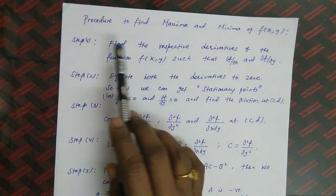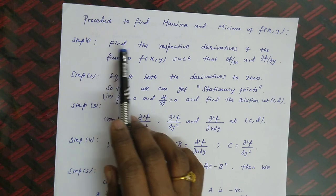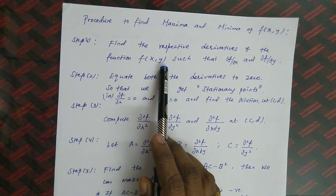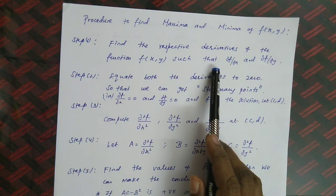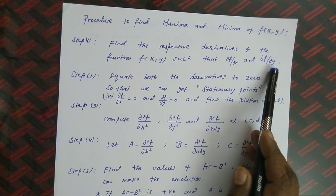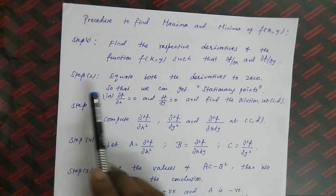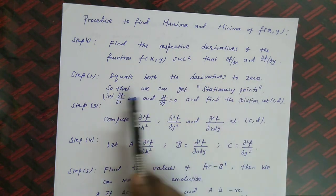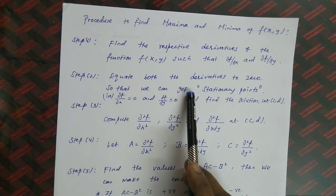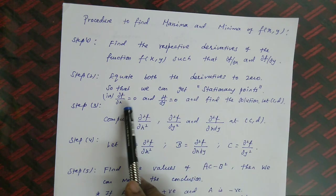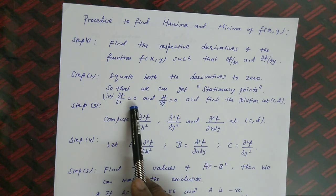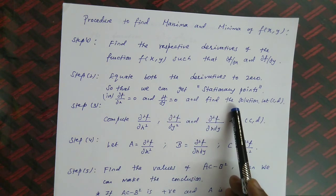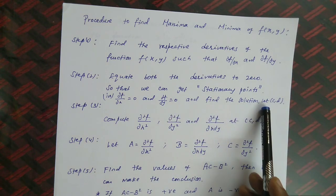Step 1: Find the respective partial derivatives of the function f(x, y), that is ∂f/∂x and ∂f/∂y. Step 2: Equate both the derivatives to 0 so that we can get stationary points — that is ∂f/∂x = 0 and ∂f/∂y = 0 — and find the solution.